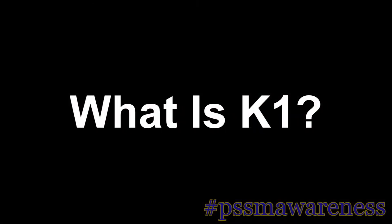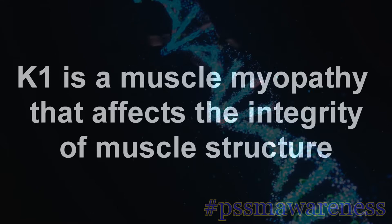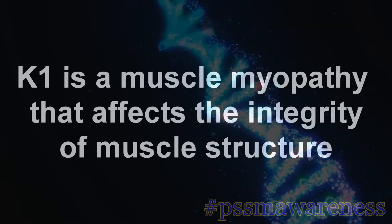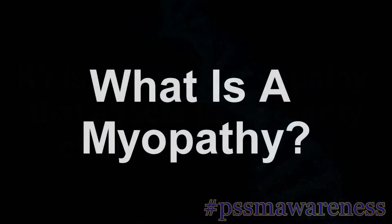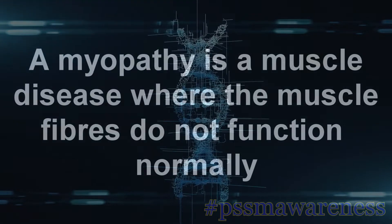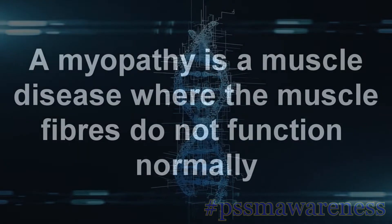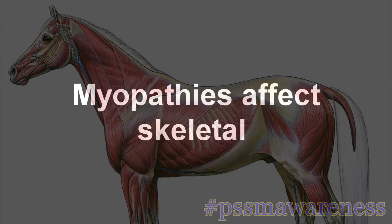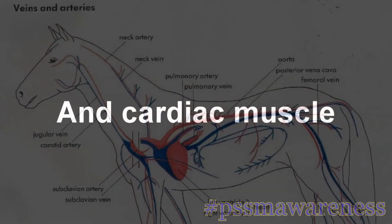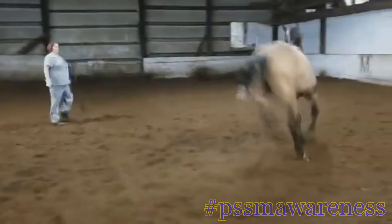What is K1? K1 is a muscle myopathy that affects the integrity of muscle structure. A myopathy is a muscle disease where the muscle fibres do not function normally. Myopathies affect skeletal and cardiac muscle and can cause motor delay, muscle weakness, muscle dysfunction, and respiratory issues.